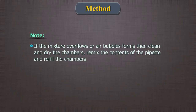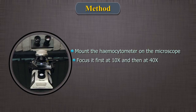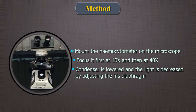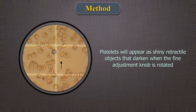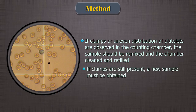Note: if the mixture overflows into the moat or air bubbles occur, clean and dry the chambers, remix the contents of the pipette, and refill both the chambers. 5. Mount the hemocytometer on the microscope and focus first at 10x and then at 40x. The platelets are seen more easily if the condenser is lowered and the light decreased by adjusting the iris diaphragm. The platelets will appear as shiny retractile objects that darken when the fine adjustment knob is rotated. If clumps or uneven distribution of platelets are observed in the counting chamber, the sample should be remixed and the chamber cleaned and refilled. If clumps are still present, a new sample must be obtained.